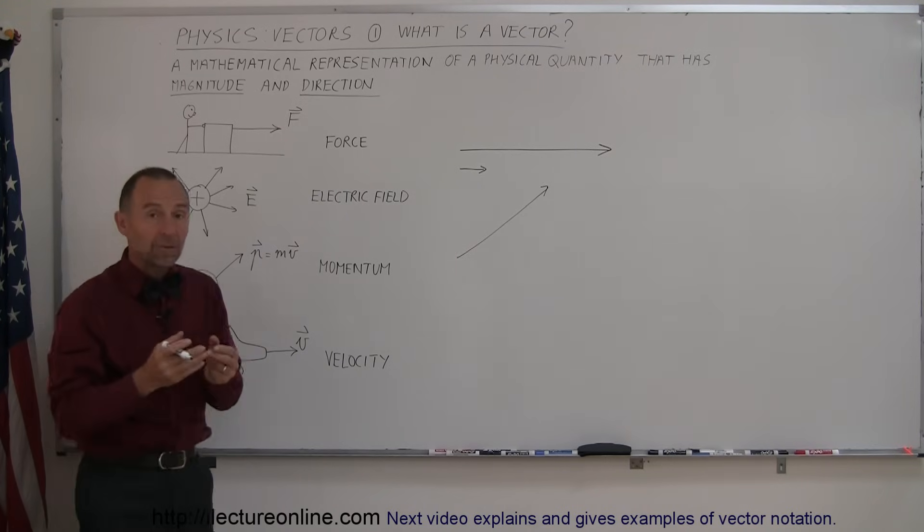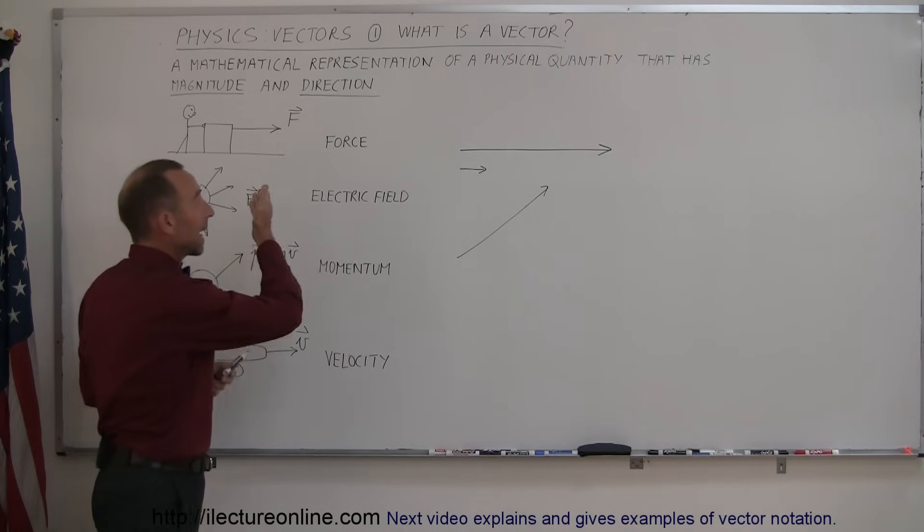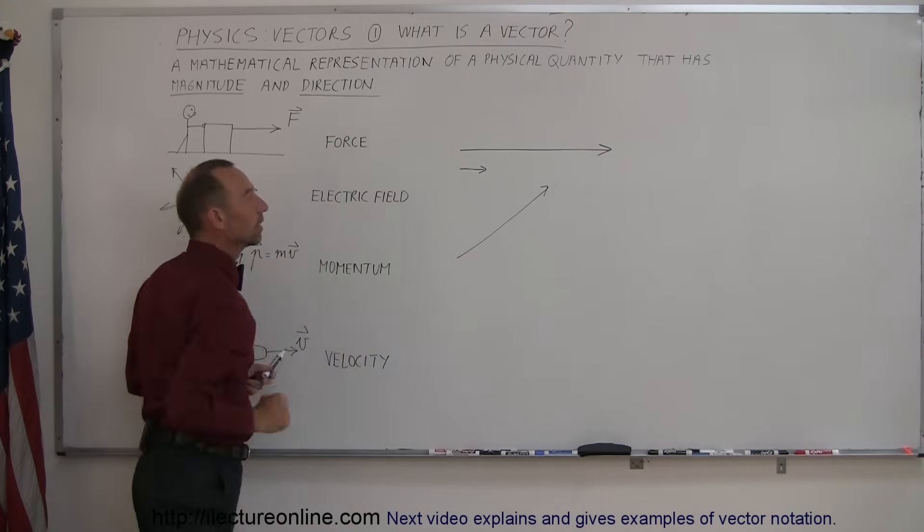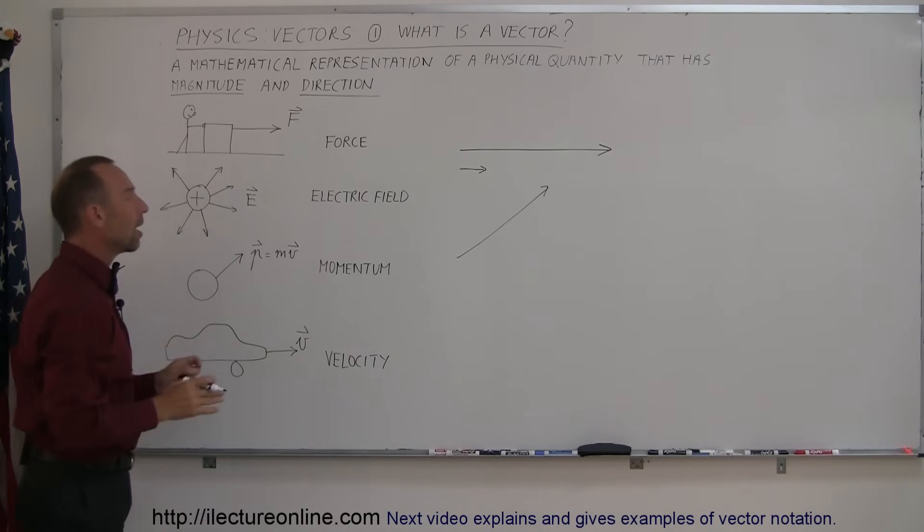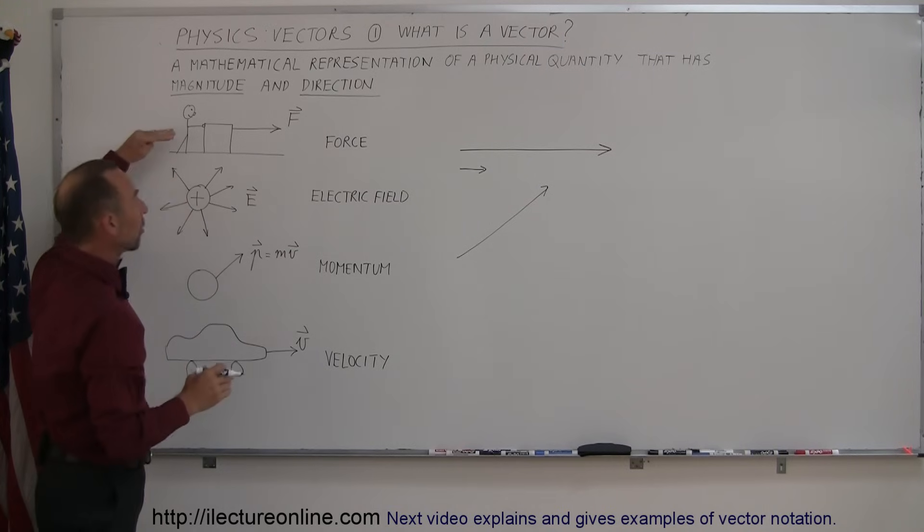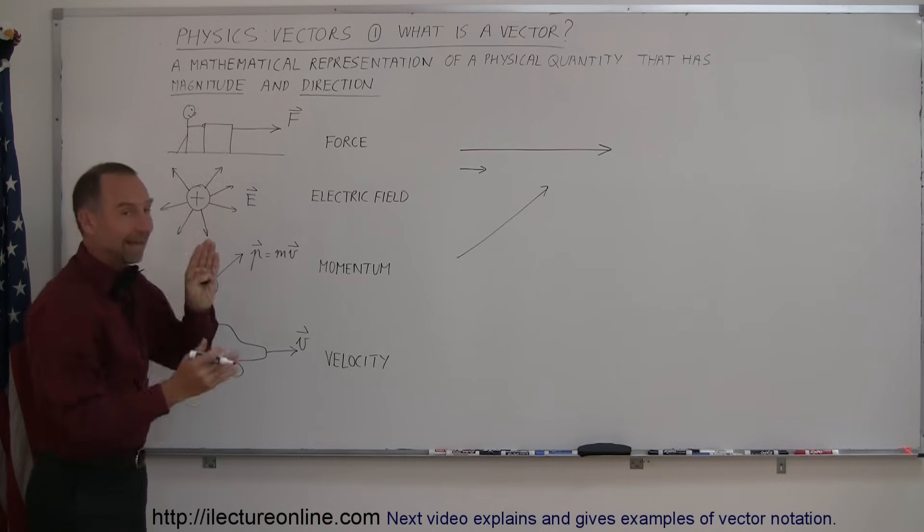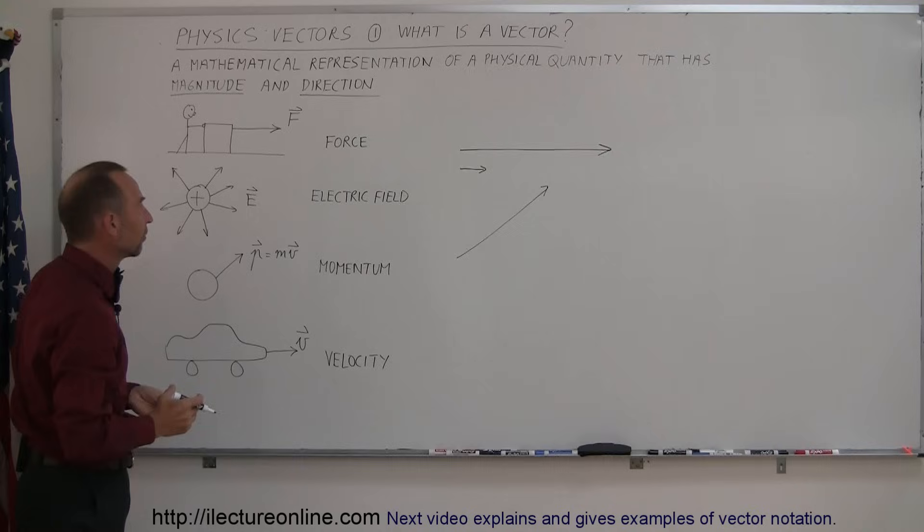The direction of the arrow represents the direction in which that quantity is acting. In case of a force, it would be acting to the right, or it would be acting in this direction. So, here I have a little drawing of somebody pushing a box, and so that person is exerting a force on that box. The direction of the force is from left to right, and the length of that arrow represents the amount of that force, how big that force is.